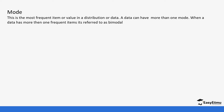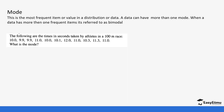When a dataset is bimodal, it has two modal values. When we talk about frequency, the value that occurs most frequently is what we refer to as the mode. If there are two numbers that occur frequently at the same value, we call them bimodal.